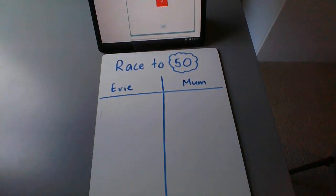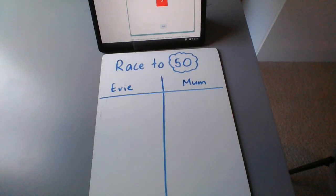Hi boys and girls, we're going to play a game called Race to 50. I've got my daughter Evie here, so she's going to play with me.